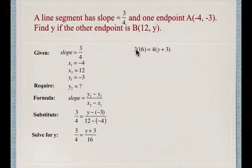After we cross-multiply, we end up with 48 equals 4y plus 12. Remember when we use the distributive property, we have to multiply everything inside the bracket by 4. So now what we have to do is subtract 12 from both sides.